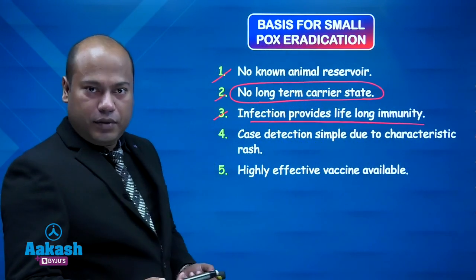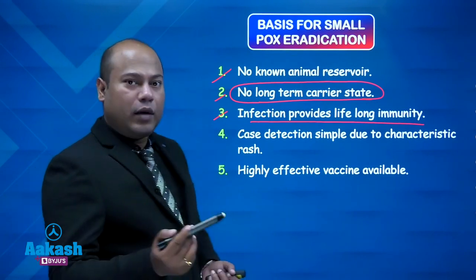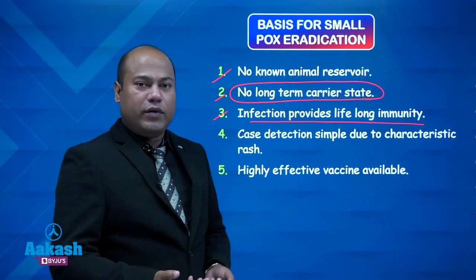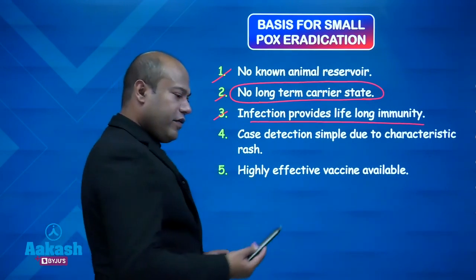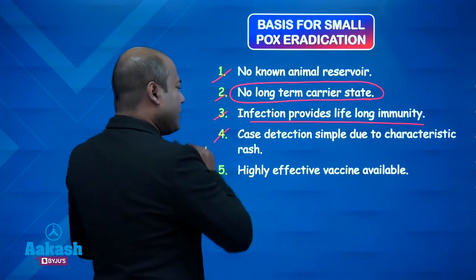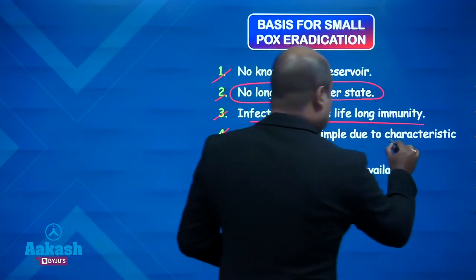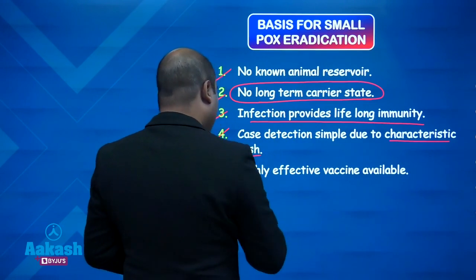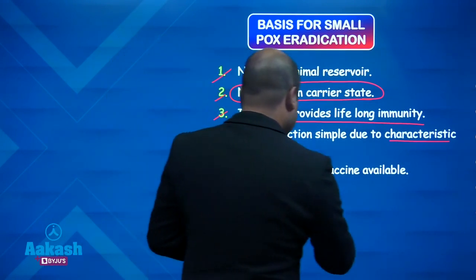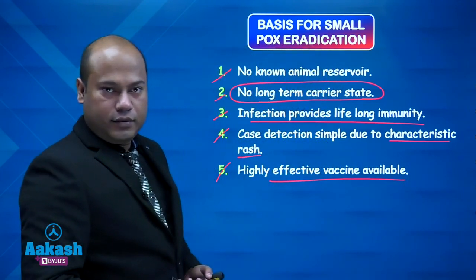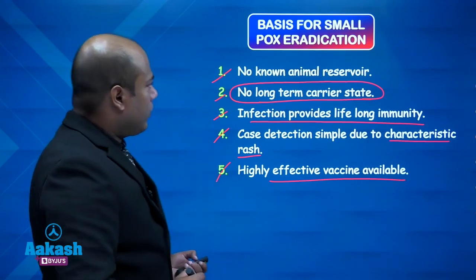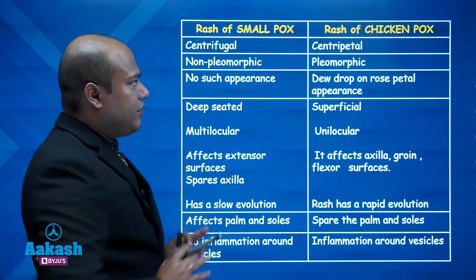Case detection is also simple because there is a characteristic rash — a non-pleomorphic, centrifugal rash. We'll look at the differences between the rash of smallpox and chickenpox. A highly effective vaccine is available; the vaccine against smallpox was discovered by Edward Jenner.